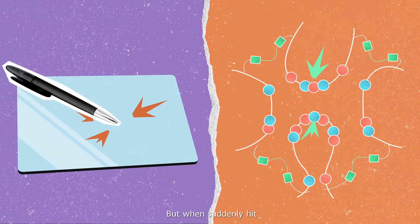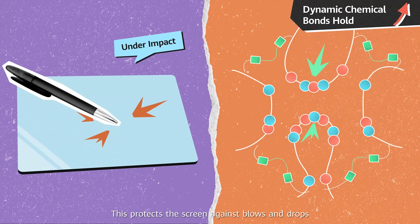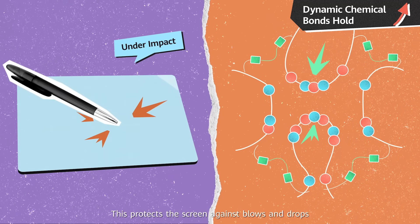But when suddenly hit, dynamic chemical bonds require a lot more energy to separate. This protects the screen against blows and drops.